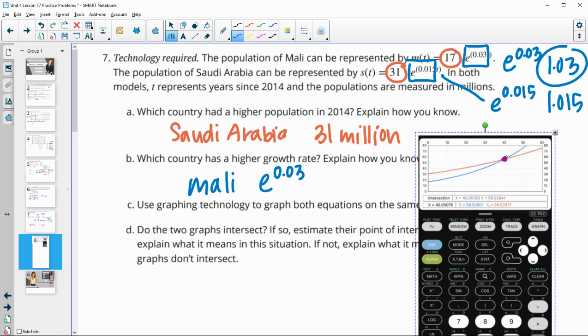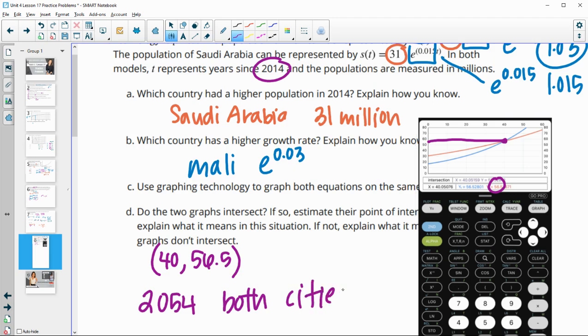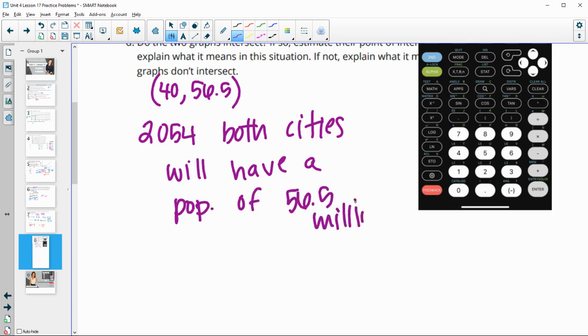And so if we kind of estimate that, you can see that that's at about x equals 40. So 40. And then if we go this way, something like 55. I actually have it on here, it's like 56.5. And so what does this represent? And so what this means is 40 years after 2014, so in the year 2054, both cities will have a population of 56.5 million. So that's when those populations are going to be the same. We know it's 40 years after 2014 and that the population is about 56.5 million.